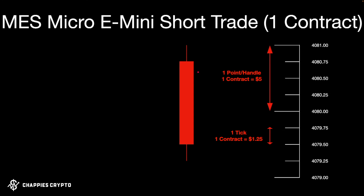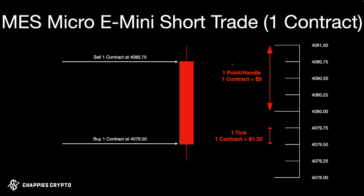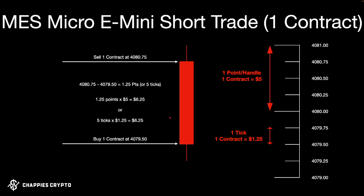Taking a short on the micro works exactly the same way. Sell one contract at the opening level of the candle, then buy one contract back at the lower level. When you do this, your account goes to minus one contract, and when you buy one back your account balance goes back to zero contracts held. Then you calculate how much money you made on that particular trade the same way as before.